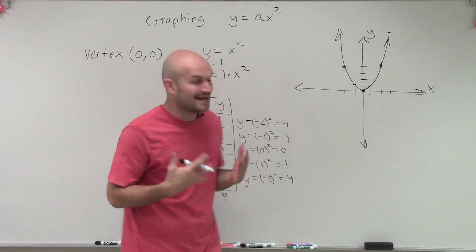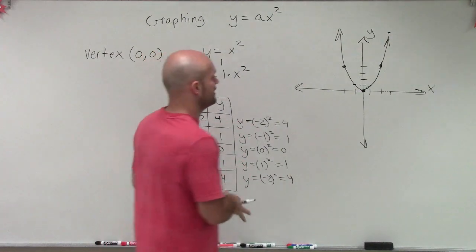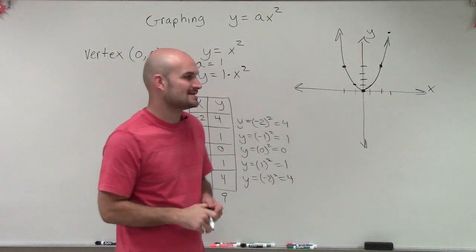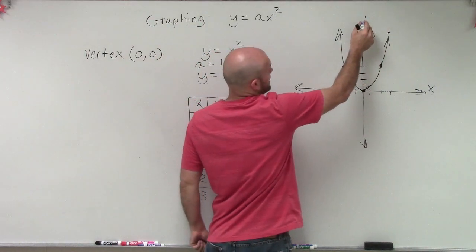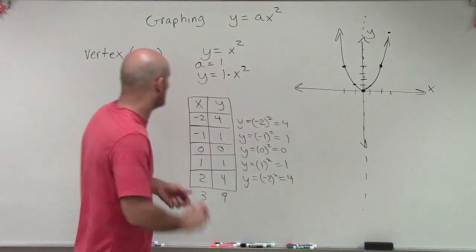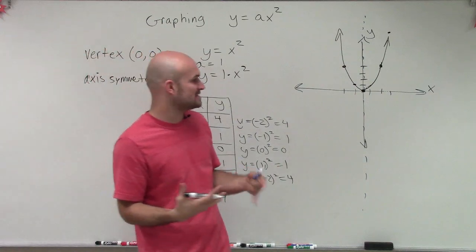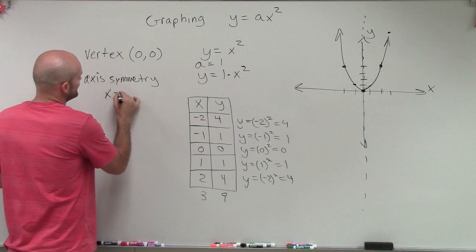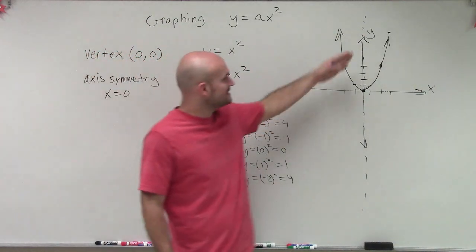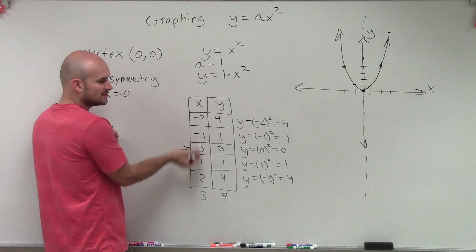The next thing we need to look at is what we call our line of symmetry. In geometry, symmetry means one half of a graph is exactly the same as the other half. If you look at this graph, the left side, when flipped over the y-axis, is exactly the same as the right side. So our line of symmetry is about this vertical line — the y-axis. The axis of symmetry is a line, not a point like the vertex. So the axis of symmetry is x equals 0. When x equals 0, that's a vertical line, and the graph reflects about it.